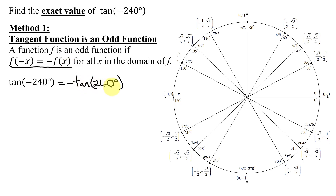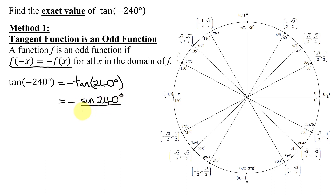Now we need to find the tangent of 240 degrees. Remember, for every angle on the unit circle, the x-coordinate is the cosine of that angle. I'm going to write the tangent function in terms of sines and cosines. Remembering that the tangent function is the sine function divided by the cosine function, I'm going to have the negative of the sine of 240 degrees divided by the cosine of 240 degrees. Those two values I can find from the unit circle.